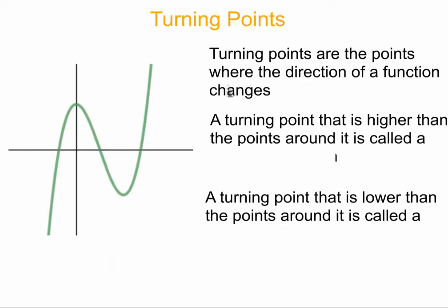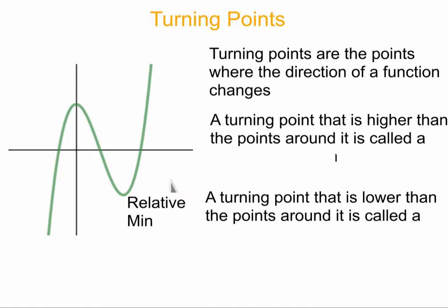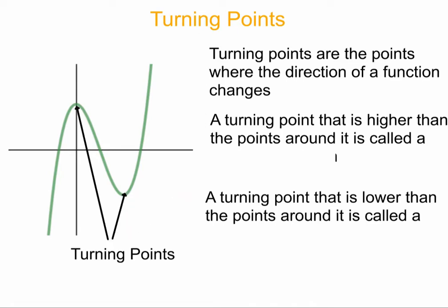Turning points are the points in the function where the graph changes direction. Looking at this function, I have two turning points — this one here and this one here. Those two points are where the graph is going up, hits a point, then comes down, hits another point, and changes direction again going up.